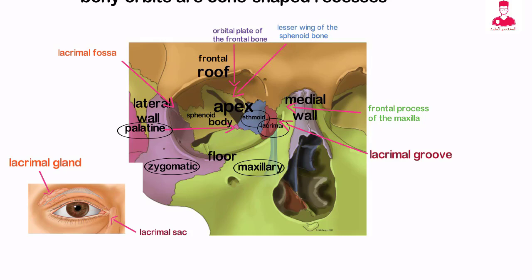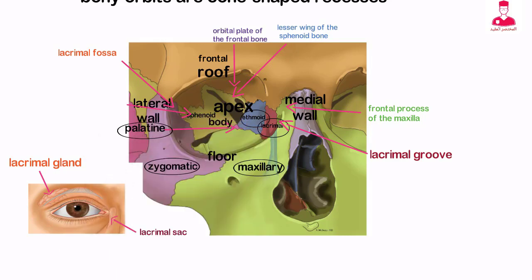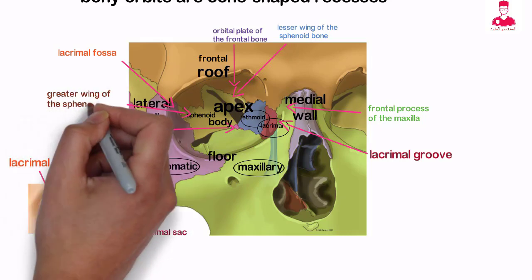The lateral wall is the thickest wall and is formed by the greater wing of the sphenoid bone and the zygoma.